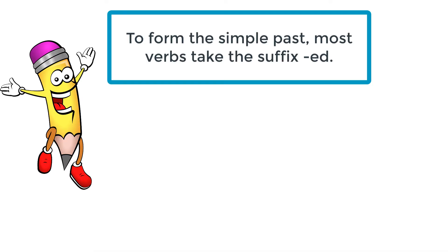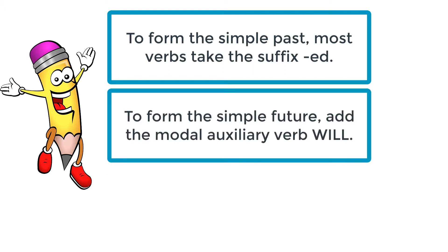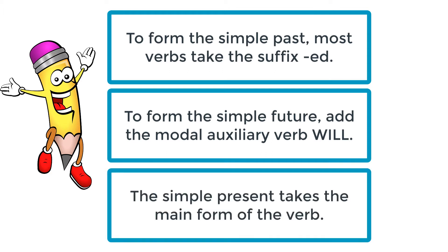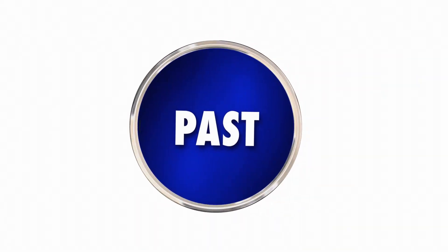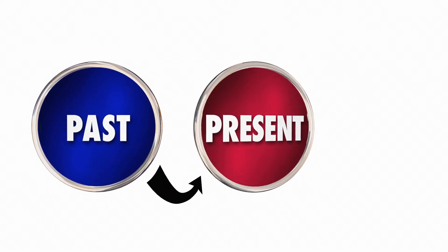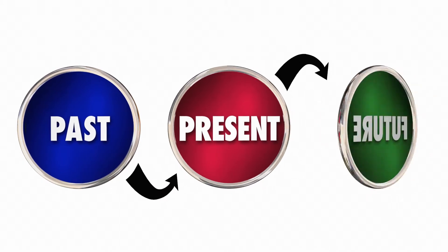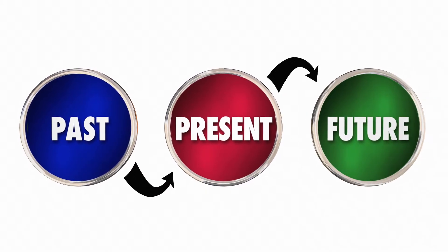For most verbs, when you form the simple past, you simply add the suffix "-ed". And to make the simple future, you add the modal auxiliary "will". We are going to look at three examples of verbs that follow the regular conjugations in the simple past, the simple present, and the simple future.